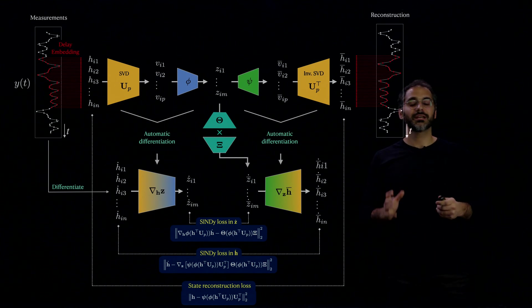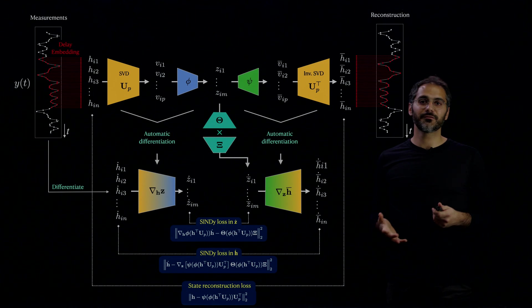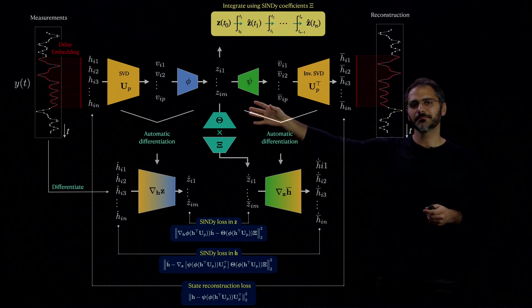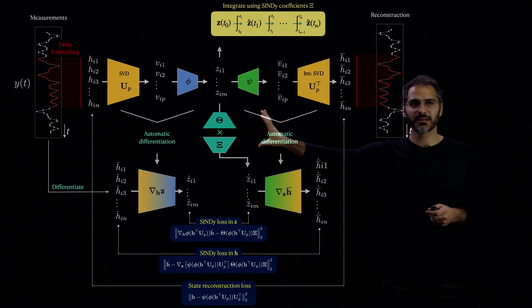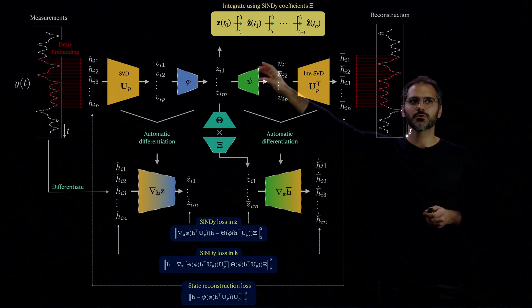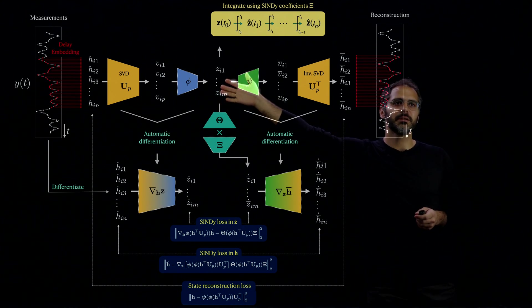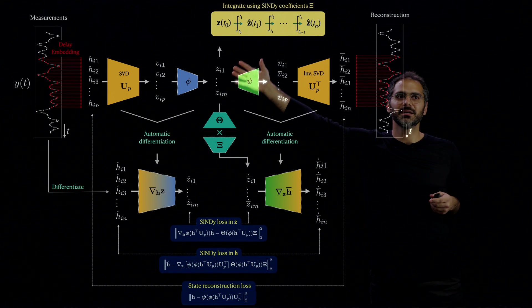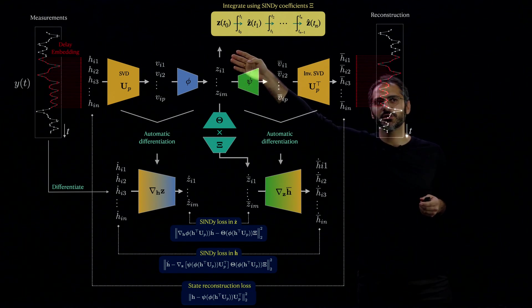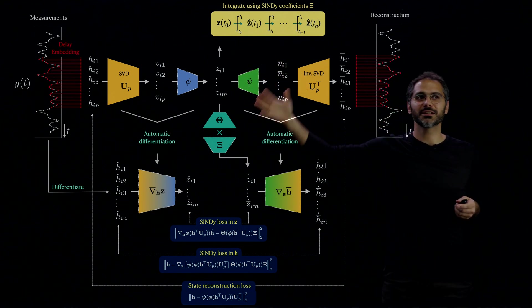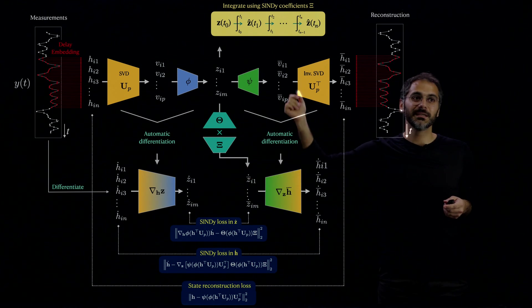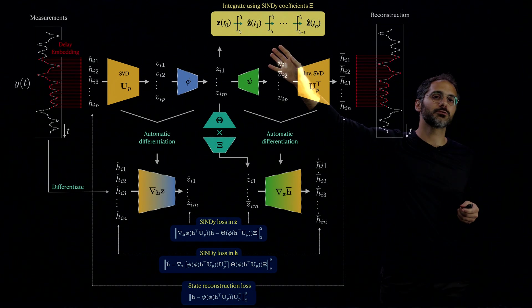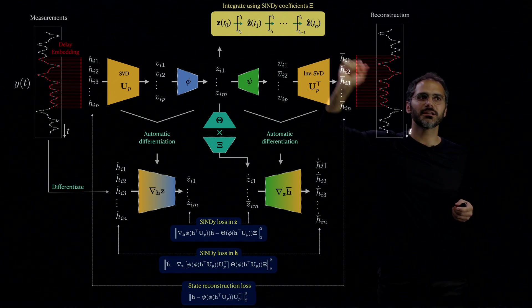Which is to take the latent variable Z and integrate it using the discovered model like this. So now we have Z, this latent variable at the given epoch or training step, which is defined as z(t₀). And then we integrate that in time using the SINDy coefficient C. And we get these time steps or the solution z-hat at t₁ until z-hat at tₙ.